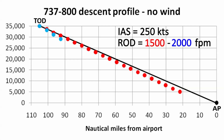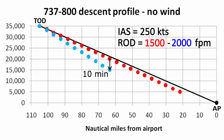I want to run through another descent using the higher rate of descent of 2,000 feet per minute, still assuming no wind. I'll use blue dots for this run, once again spaced one minute apart. Obviously with a higher rate of descent, the airplane's track will be even farther below the geometric track. The plane will be at 15,000 feet 10 minutes into the descent — compare this to the 20,000 feet the plane was at 10 minutes into the descent at only 1,500 feet per minute.